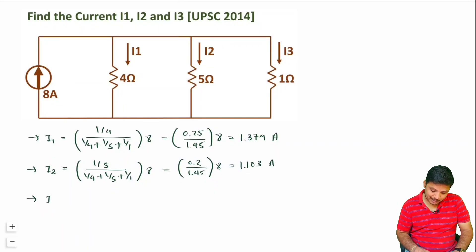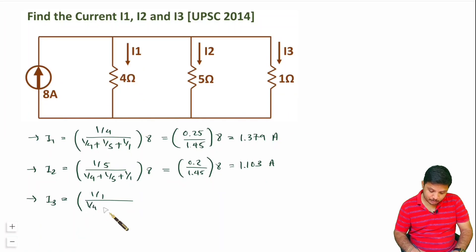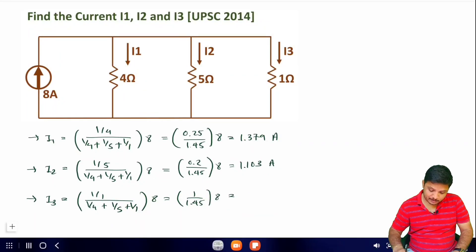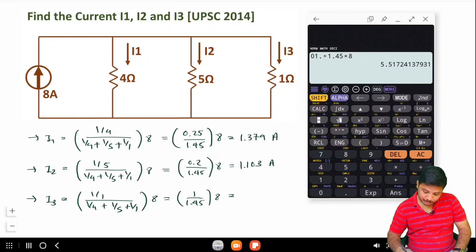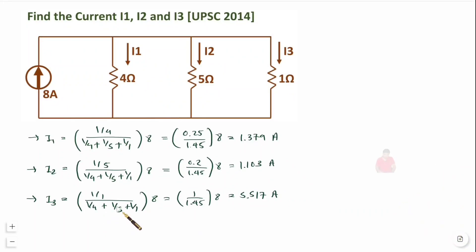For I3: I3 equals (1/1) divided by (1/4 + 1/5 + 1/1) times 8 — that is 1 divided by 1.45 times 8, giving I3 equals 5.517 amperes. That is how we apply the Current Divider Rule.